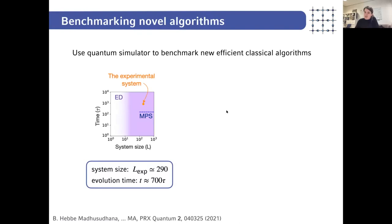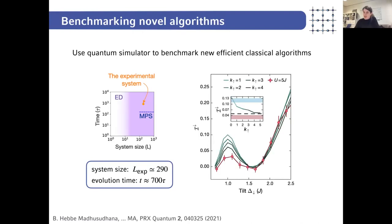This was surprising because we work at relatively low values of the tilt — delta over J equals three and U over J equals five — by no means in the limit where the analytic derivation of the fragmented Hamiltonian makes sense. If you want to read more, a postdoc in our group developed a more efficient numerical description that extends to larger system sizes and longer tunneling times, benchmarked using our experimental data, published in PRX Quantum this year.